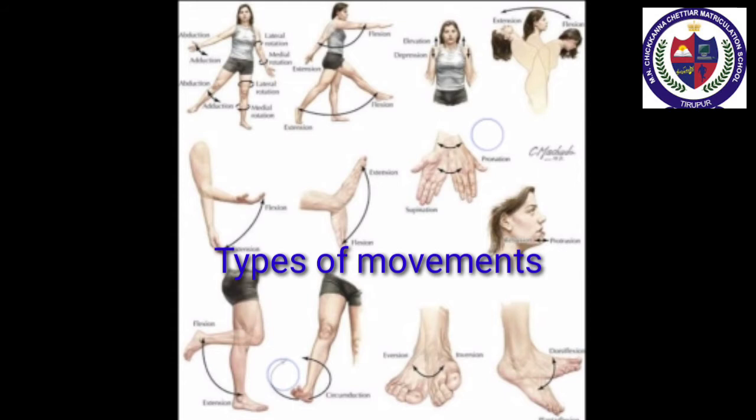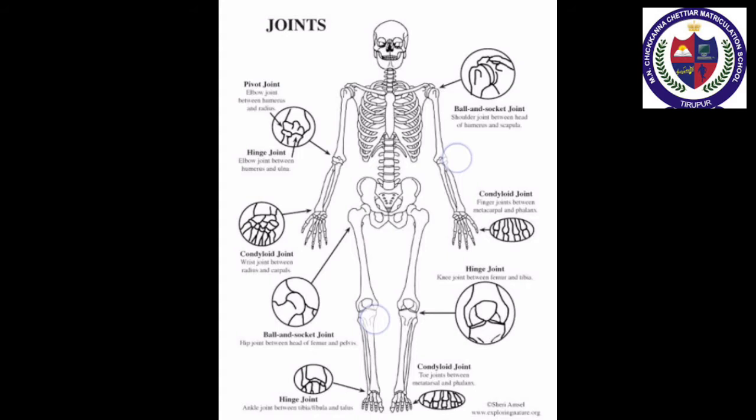Types of movement: there are three types of movements — amoeboid movement, ciliary movement, and muscular movement. Next, joints: the point at which two separate bones meet is called a joint.